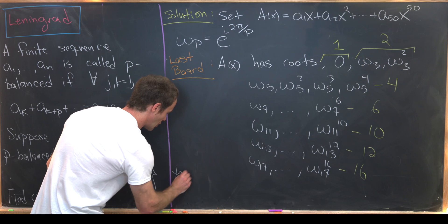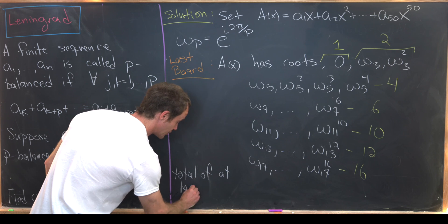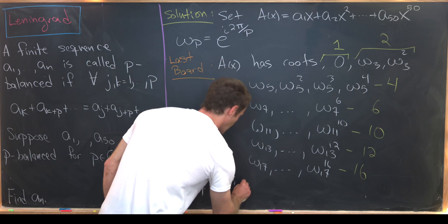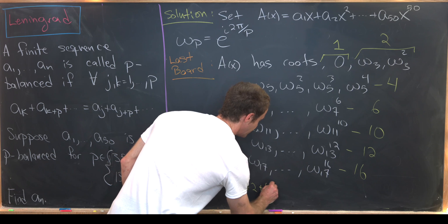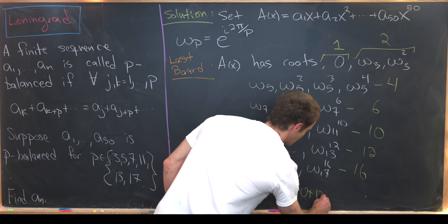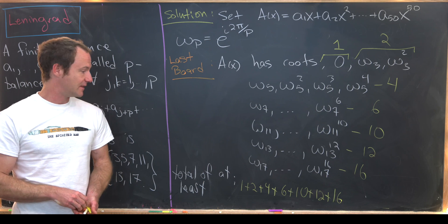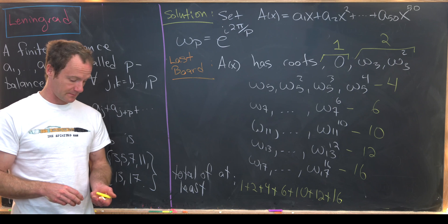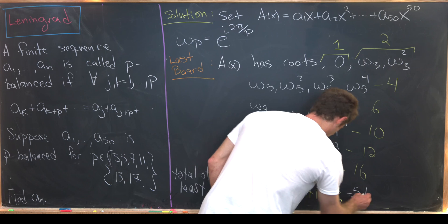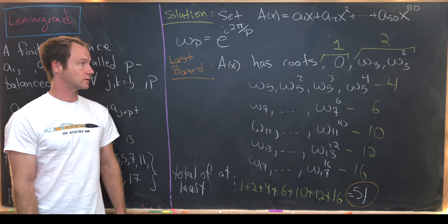Now we can count up the roots of this polynomial. We've got a single root here from just plugging in zero. I'll just write in yellow the number of roots that each of these gives us. So we've got two roots here. We have four roots here, six here, six here, 10 here, 12 here, and 16 here. So that gives us a total of at least, because there could be more, how many roots? Well, we've got 1 plus 2 plus 4 plus 6 plus 10 plus 12 plus 12 plus 16. But now if you add those up, you in fact get the number 51.